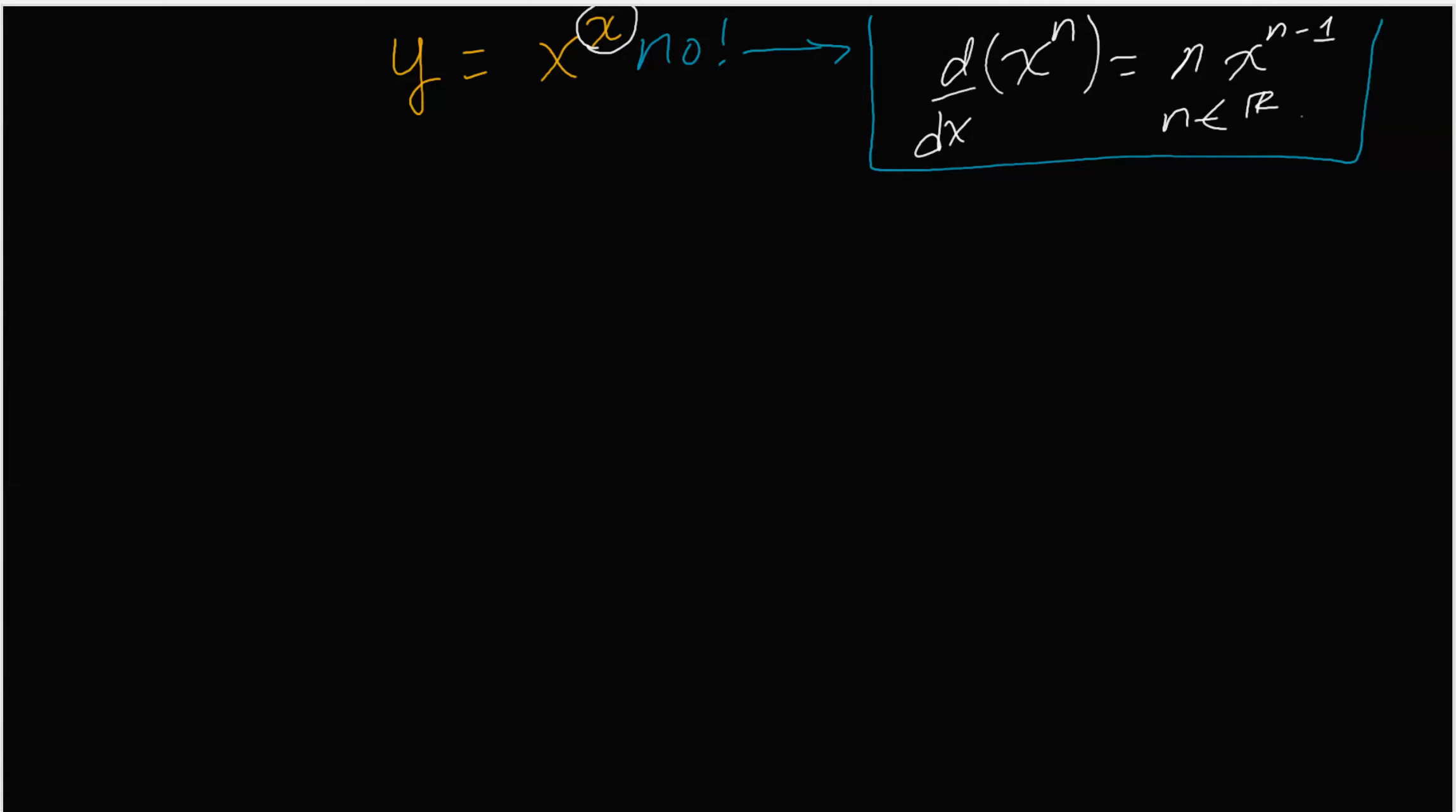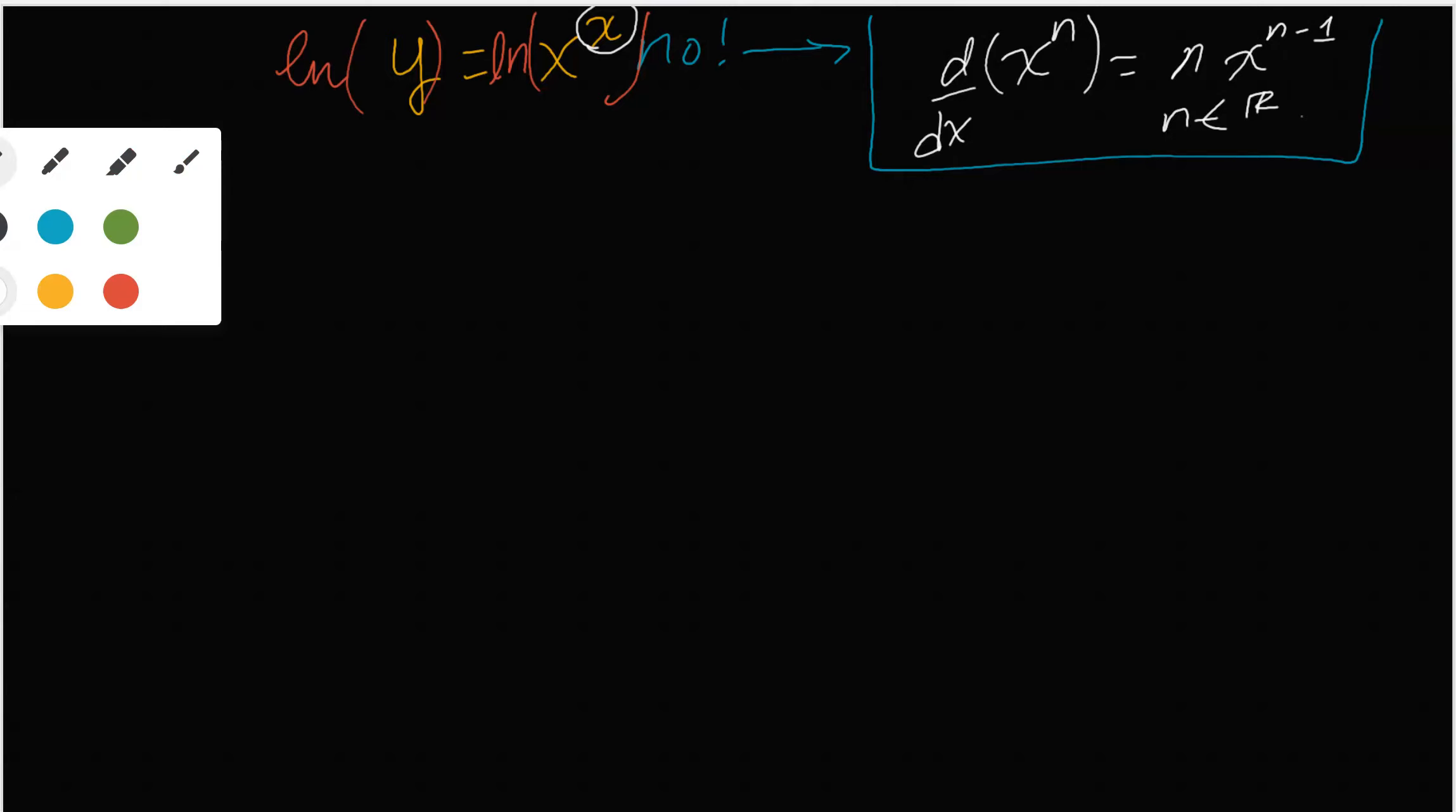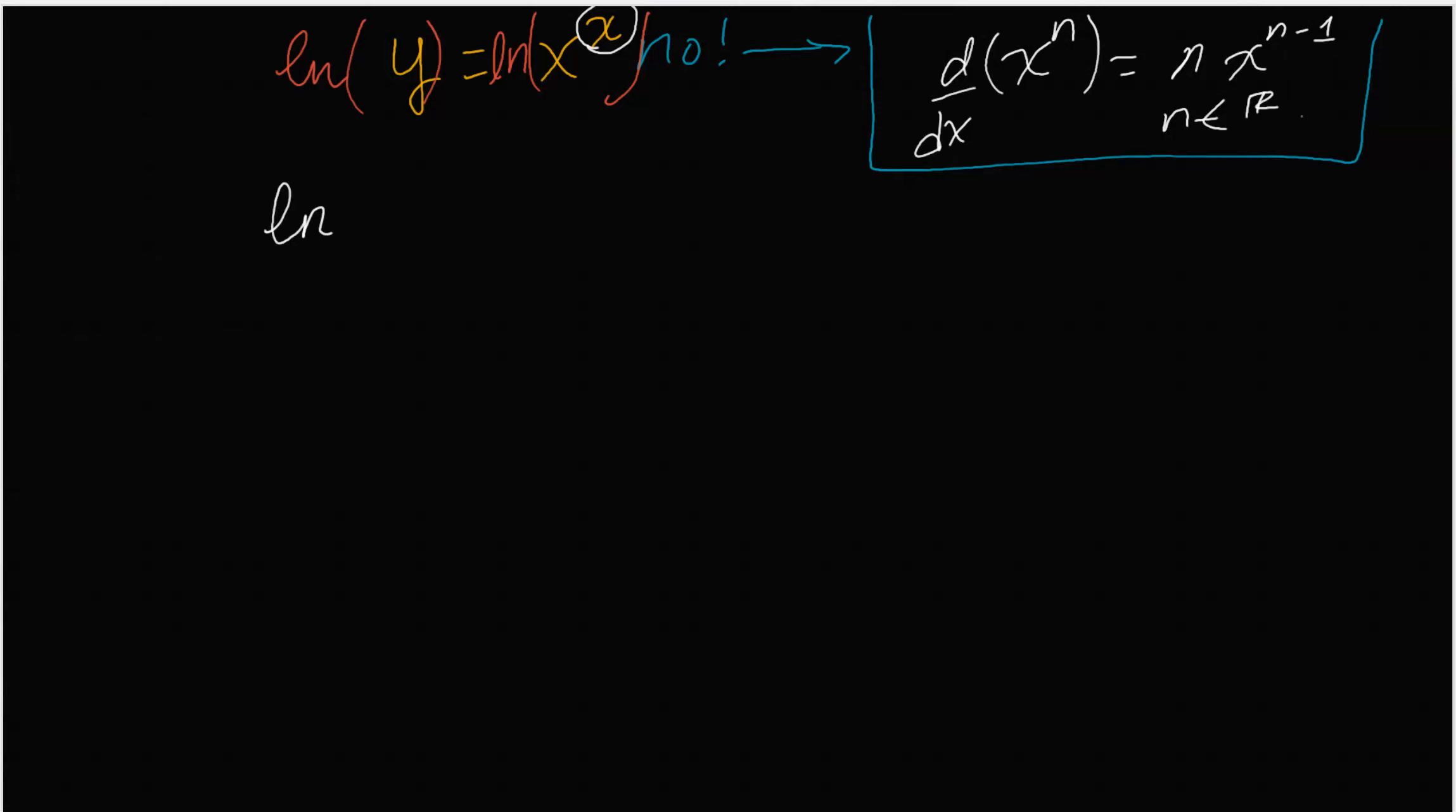So how can I move the x somehow? Well, what I can do is go ahead and take the natural log of both sides, okay? And when I take the natural log of both sides, the property of log will apply. This on the left-hand side is ln of y. On the right-hand side, this x could go down, right? Natural log said the exponent can go in the front. So this becomes x multiplied by ln of x. Nice. Now I don't have to deal with the x on top as an exponent.